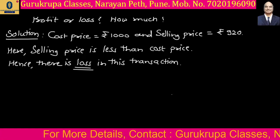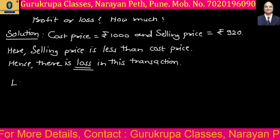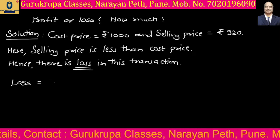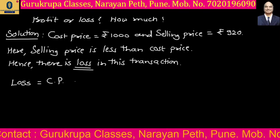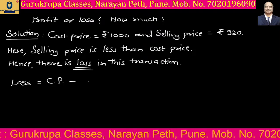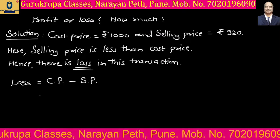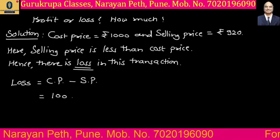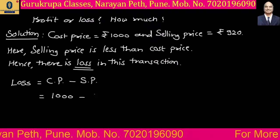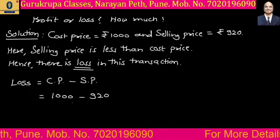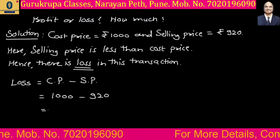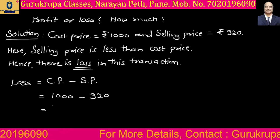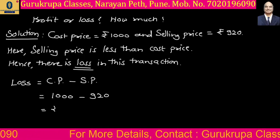But how much loss would be there? So for that we write down the formula. Loss is equal to CP minus SP. Since SP is less than CP, we have to subtract SP from CP. CP is 1000, SP is 920. So 1000 minus 920: that is 1000 minus 900 equals 100, then 100 minus 20, we get rupees 80.